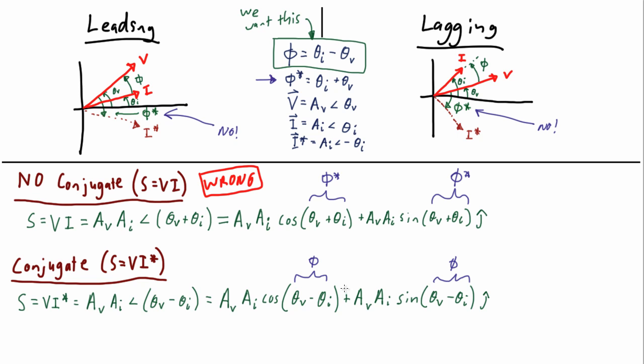Remember, we're using the current's conjugate phasor. The magnitude stays the same. The angle is what changes—it's the opposite. That's what the conjugate does.